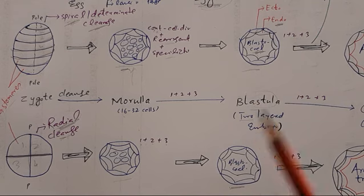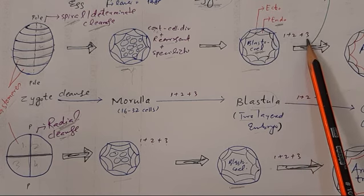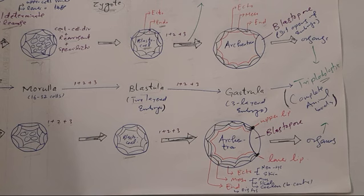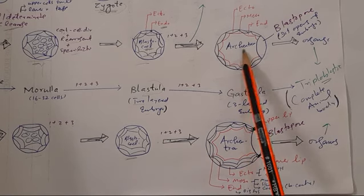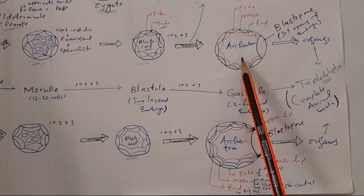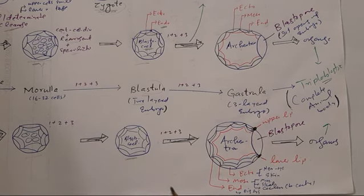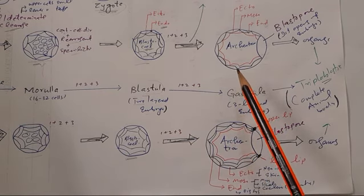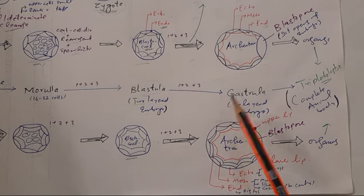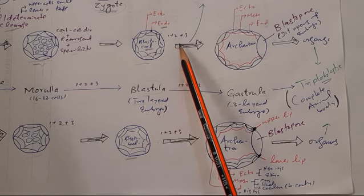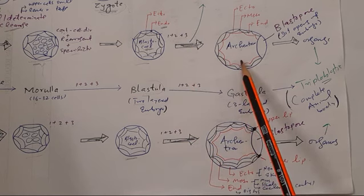Similarly, the blastula also undergoes the same three processes — continuous cell division, rearrangement, and specialization — and as a result a three-layered embryo is formed called gastrula. Two diagrams are shown because in one the zygote undergoes spiral cleavage and in the other radial cleavage; all remaining steps are the same. The blastula undergoes continuous cell division, rearrangement, and specialization forming a three-layered embryo called gastrula.